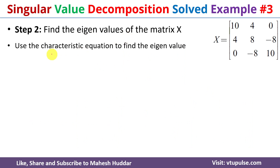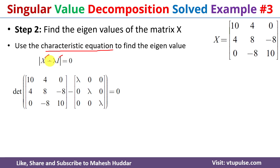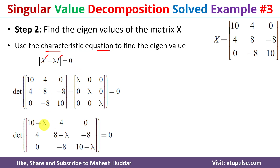To find the eigenvalues we use the characteristic equation: determinant of (x minus lambda·I) equals zero. We know the value of x and the identity matrix I, where diagonal values are 1 and remaining are 0. Substituting and simplifying gives the matrix with entries 10-λ, 4, 0; 4, 8-λ, -8; 0, -8, 10-λ.